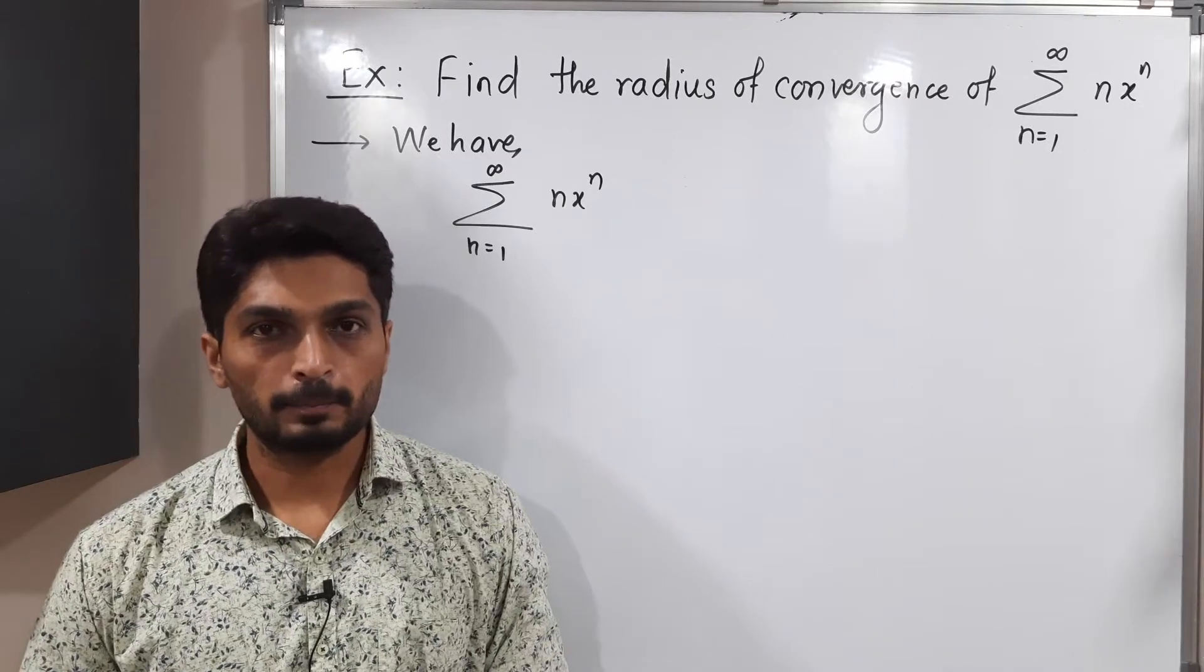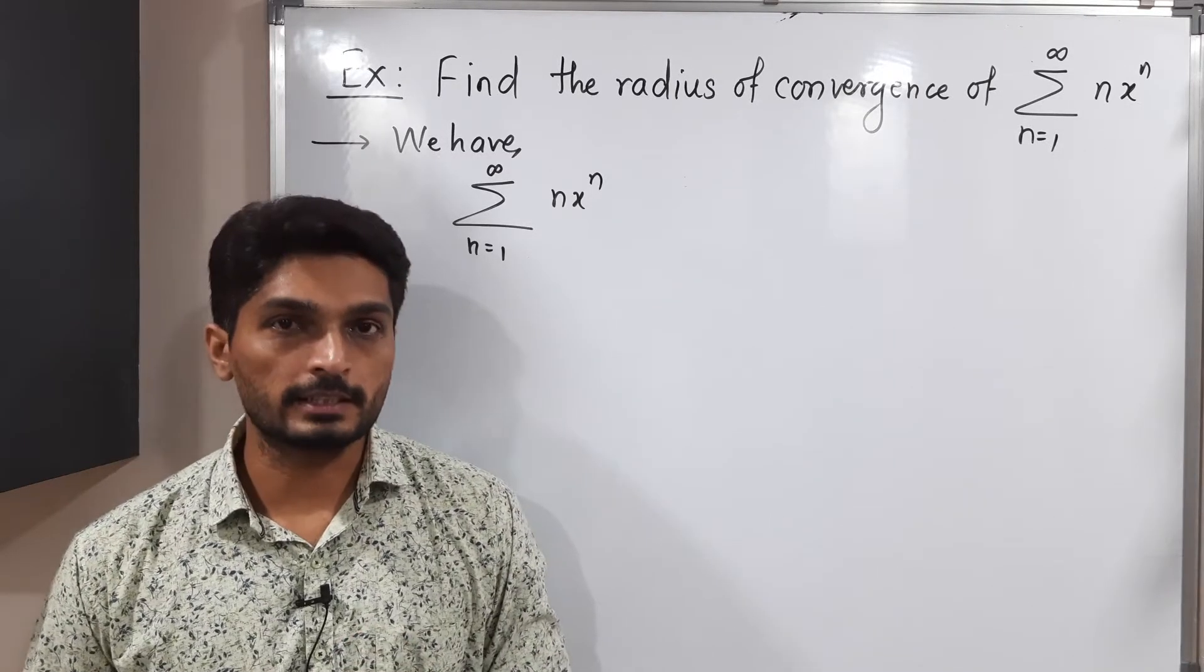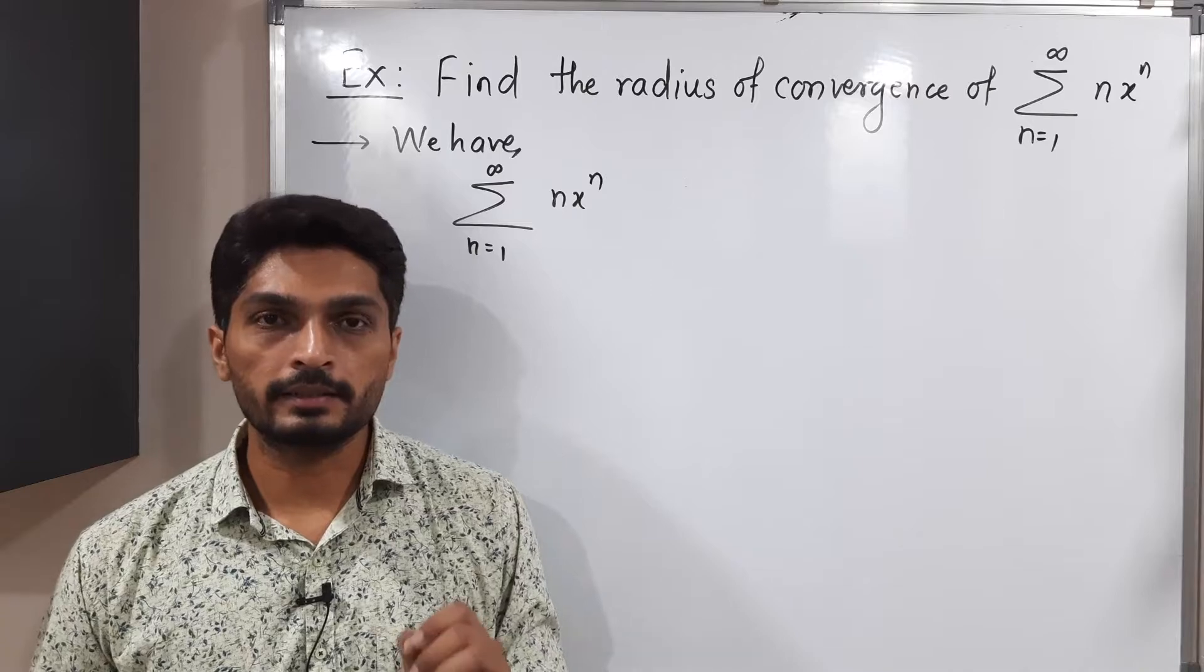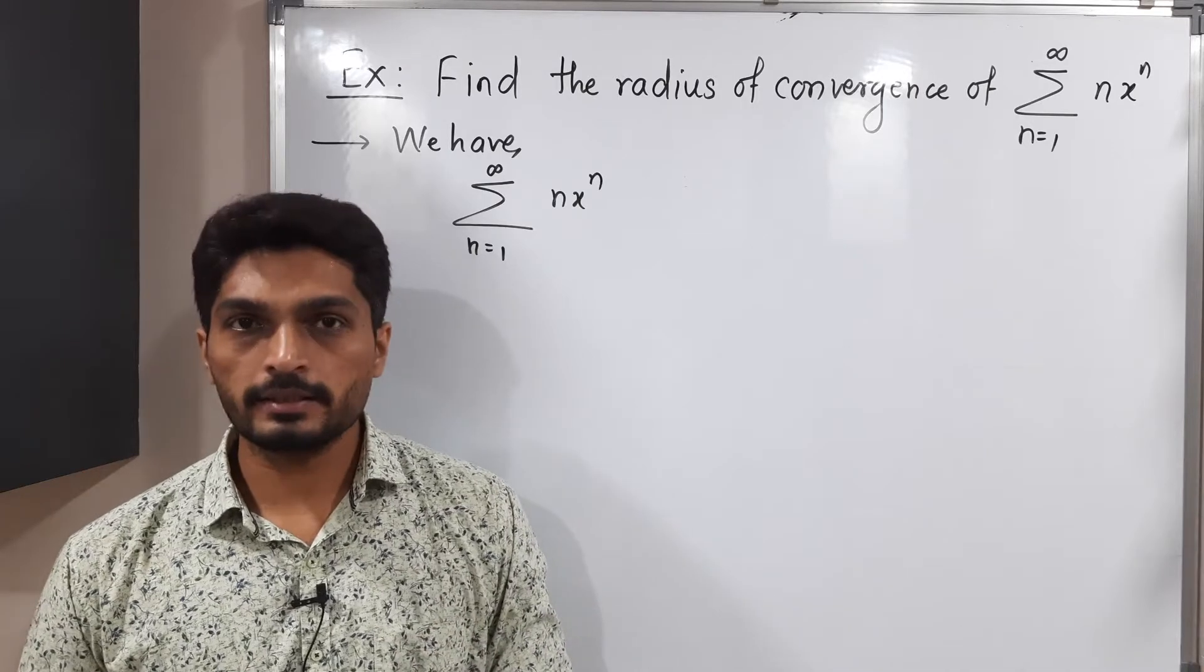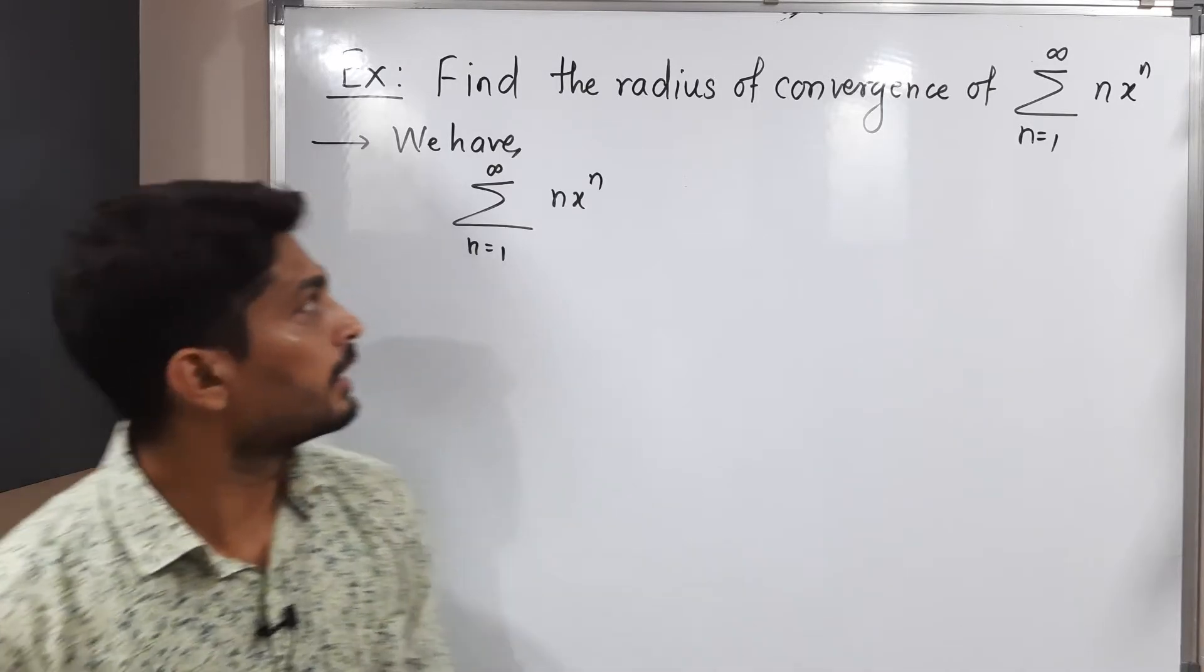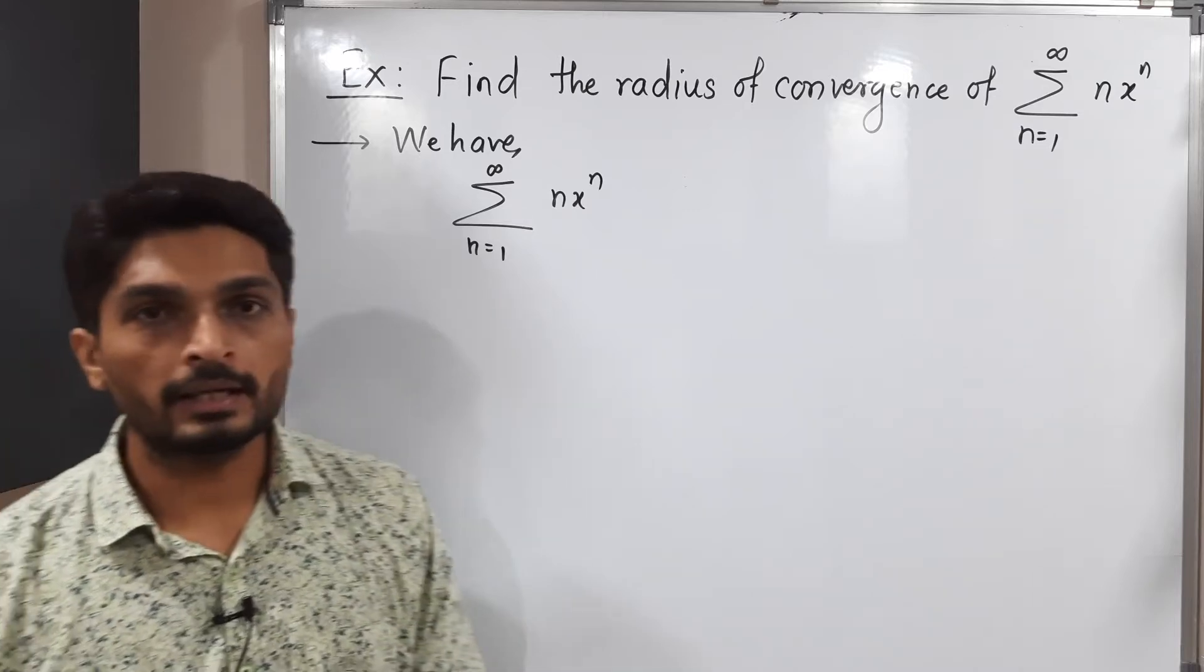Let us discuss this example. In this example we have a power series and we have to find its radius of convergence. Let us write the given power series first. I have already written summation nx^n.